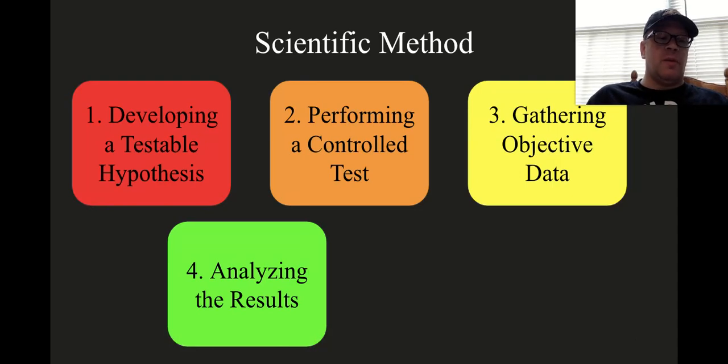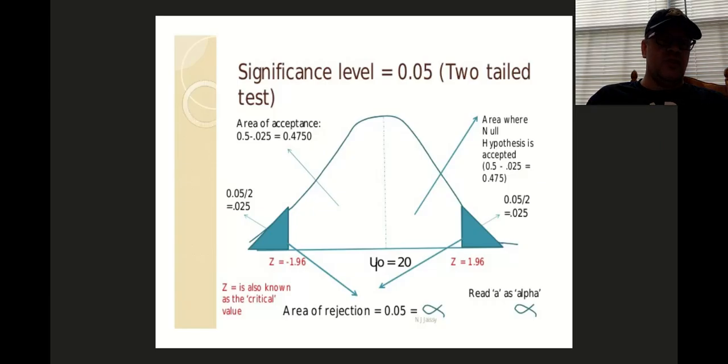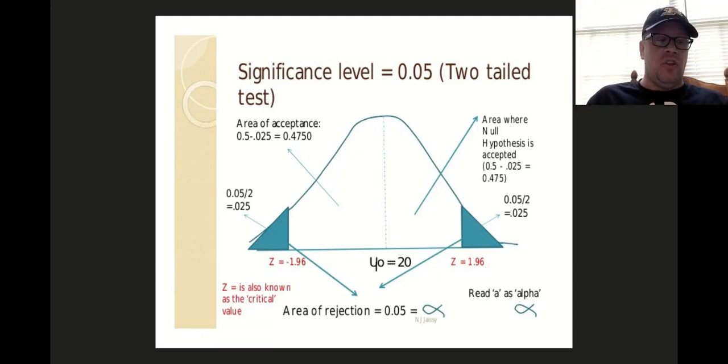The fourth step of the scientific method is analyzing the results, which will allow the researcher to either accept or reject the hypothesis. To analyze the results often involves statistical analysis to determine the observed results level of significance, which is going to tell the researcher if the results were likely due to the independent variable or merely due to chance.